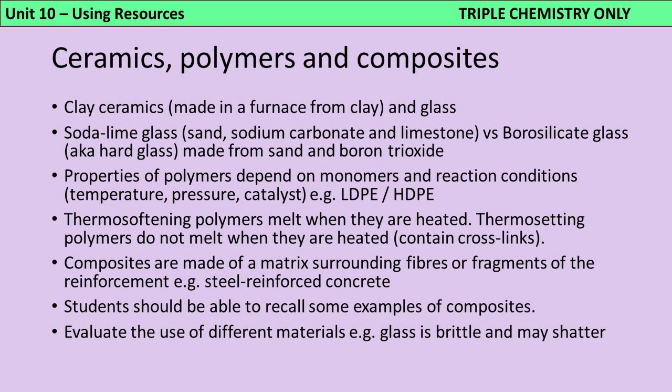Composites are materials made out of two different materials. One is called the reinforcement, which provides a heavy-duty structure, and the second is called the matrix or binder, which glues the whole thing together. For example, in steel-reinforced concrete, the steel provides the main structure and the concrete glues it all together.